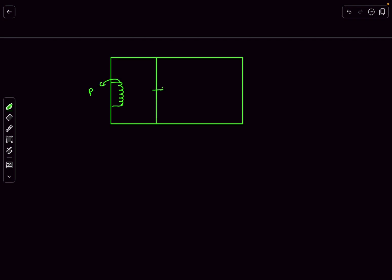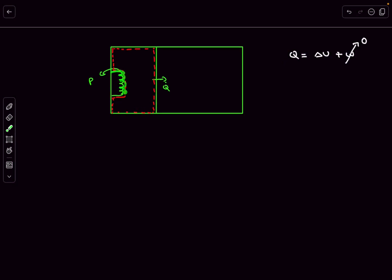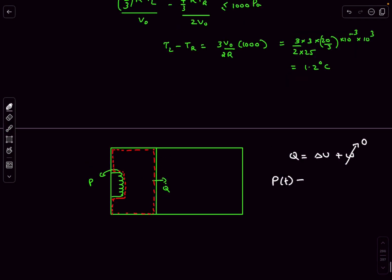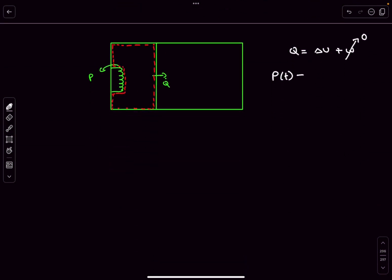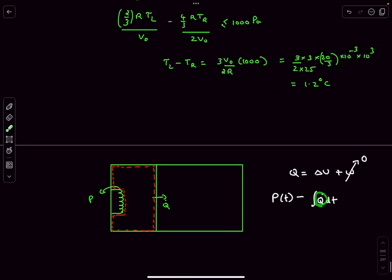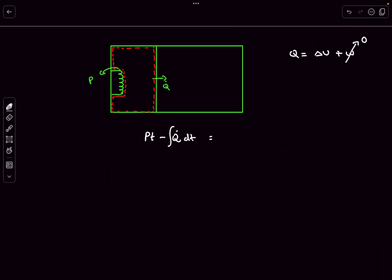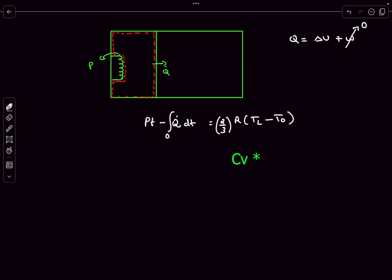Let the power of the electric heater be P and the heat transfer rate into the right container be Q̇. Applying the first law of thermodynamics to the left chamber boundary: heat in is P·t, heat leaving is the integral of Q̇ dt (since Q̇ is not constant but changes as ΔT changes), and this equals the change in internal energy of the left gas: (2/3)R(TL − T₀).